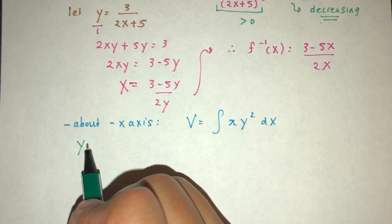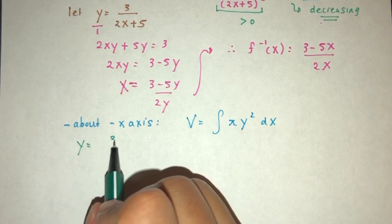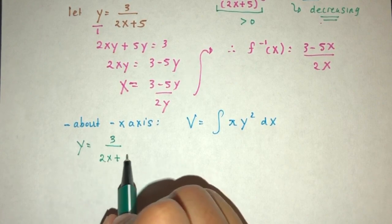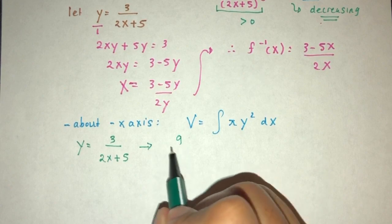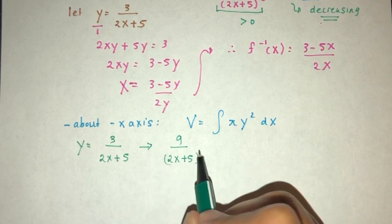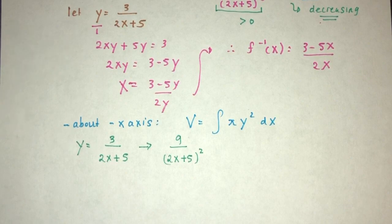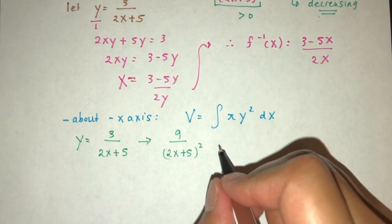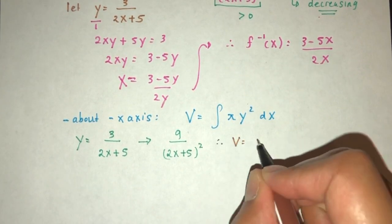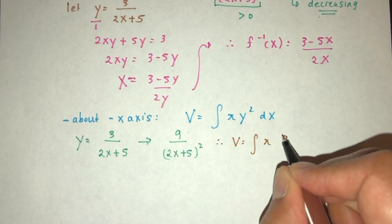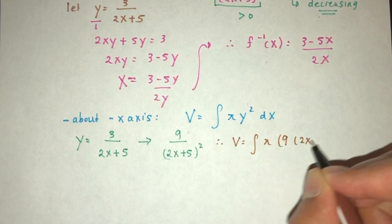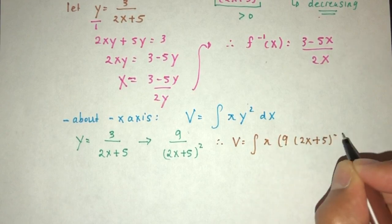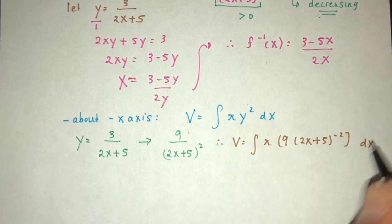Now, we know that the value of y was given to you by 3 over (2x plus 5). From here, y squared will be 9 over (2x plus 5) squared. So here we simplify. That should be 9, (2x plus 5), minus 2.